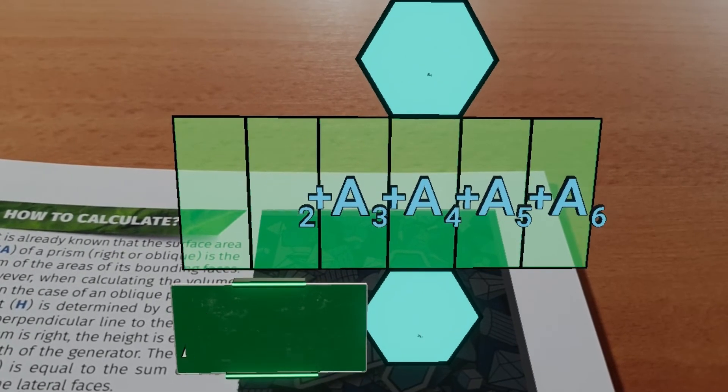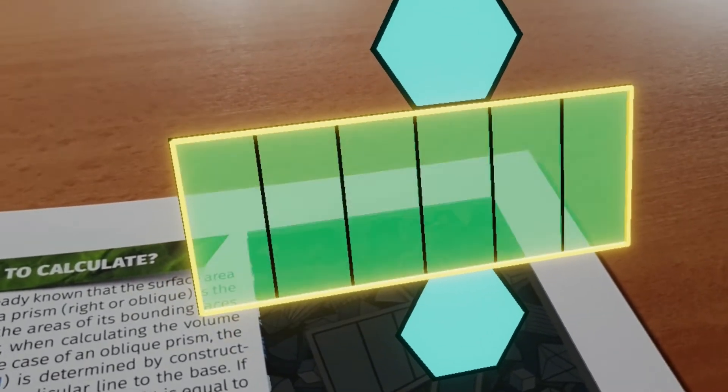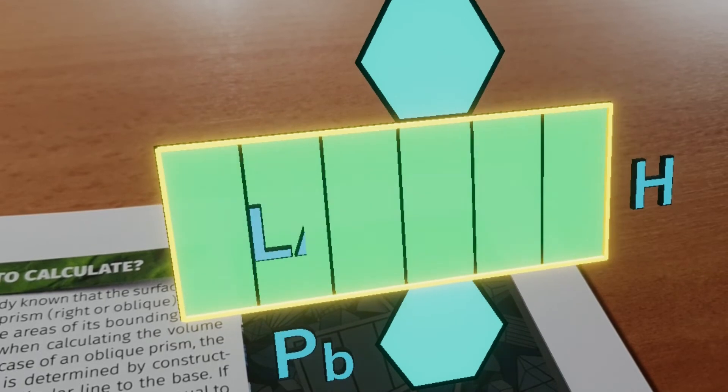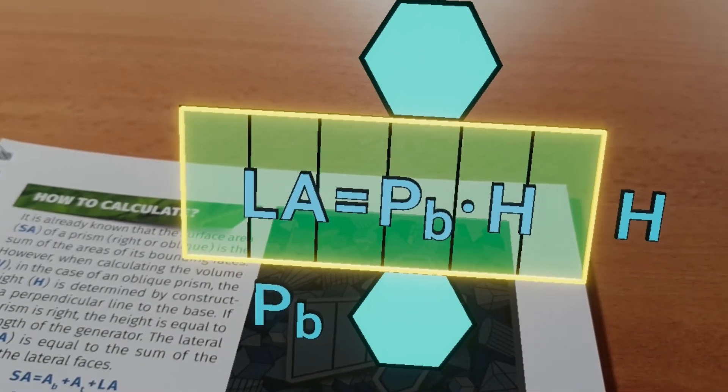In our case, the development of the lateral surface forms a rectangle, so the area of the lateral surface is equal to the product of the perimeter of the base and the height of the prism.